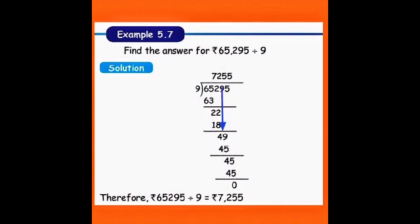Balance amount is 4. Take down the 9, you get 49. How many 9s in 49? 5 nines, that is 45. If you subtract you will get 4 as a remainder. Take down the next 5. Again that is 45. 9 will have 5. 5 nines are 45. If you subtract you will get 0 as a remainder. Therefore rupees 65295 divided by 9 equals rupees 7255.